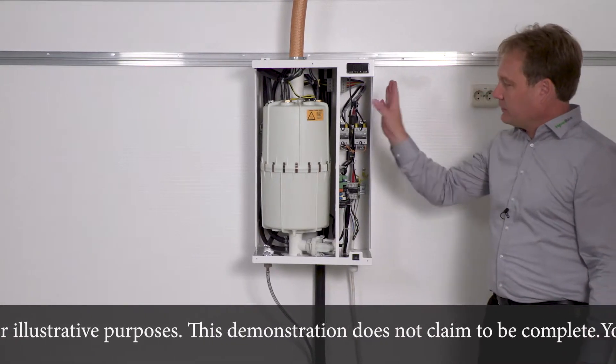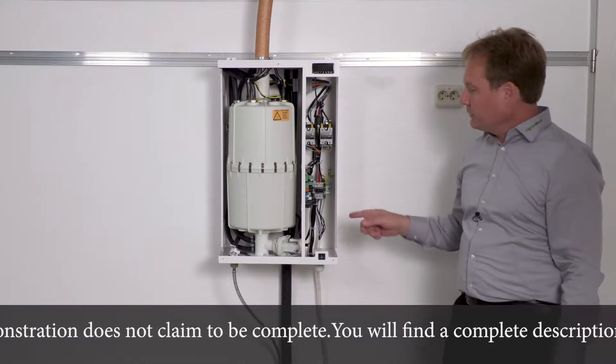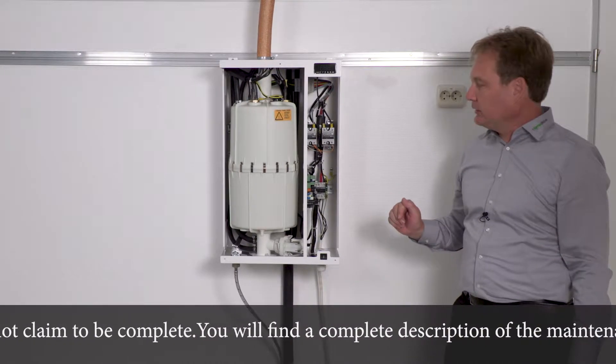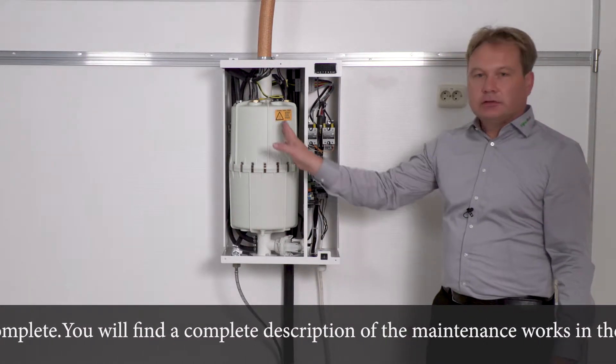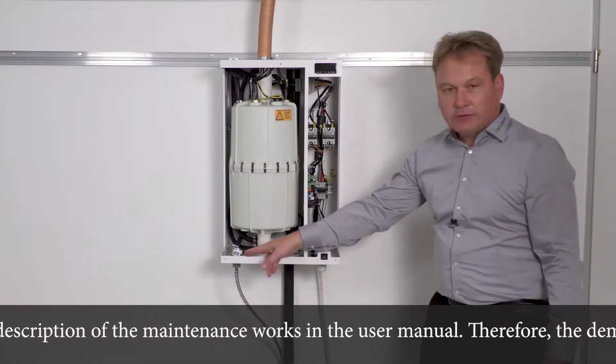As you can see, the unit has two compartments. The right compartment is the electrical compartment with all the electronic and electrical components. The left side is the so-called steam compartment with steam cylinder, solenoid valve, and a blowdown pump.